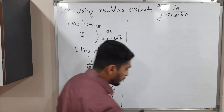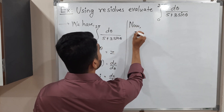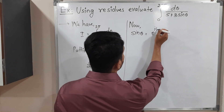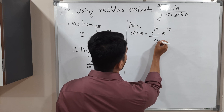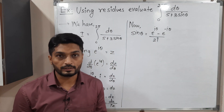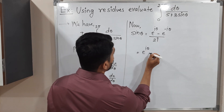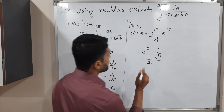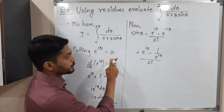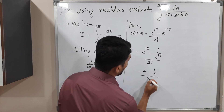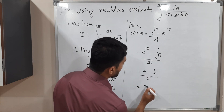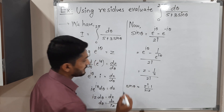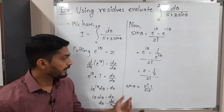Next we express sinθ in terms of z. Using Euler's formula: sinθ = (e^(iθ) − e^(−iθ)) / (2i) = (z − 1/z) / (2i) = (z² − 1) / (2iz). This is the value of sinθ in terms of z.